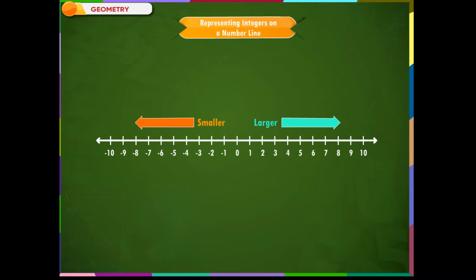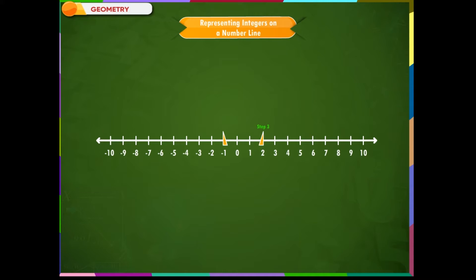Example 1: Draw a number line and mark on it the integer which is 3 more than minus 1. Solution: Draw a number line and mark minus 1. We are asked to mark an integer which is 3 more than minus 1. We know that the value of integers increases as we move towards the right on a number line, so we move 3 steps from minus 1 towards the right — 1, 2, and 3 — and we reach 2. Therefore, 3 more than minus 1 is 2.